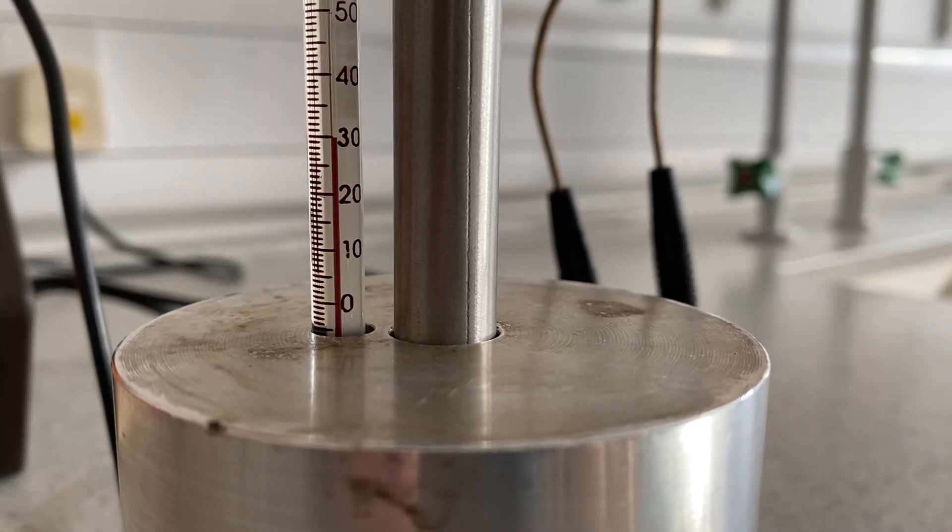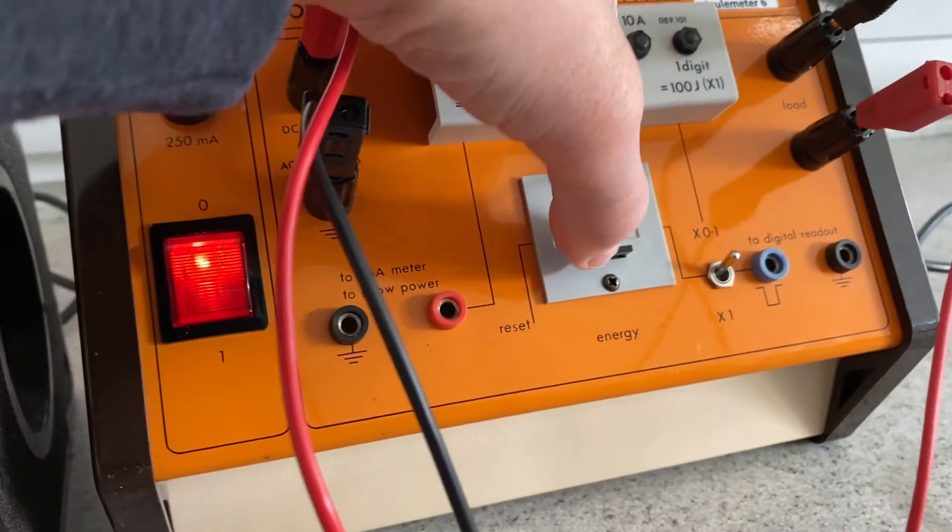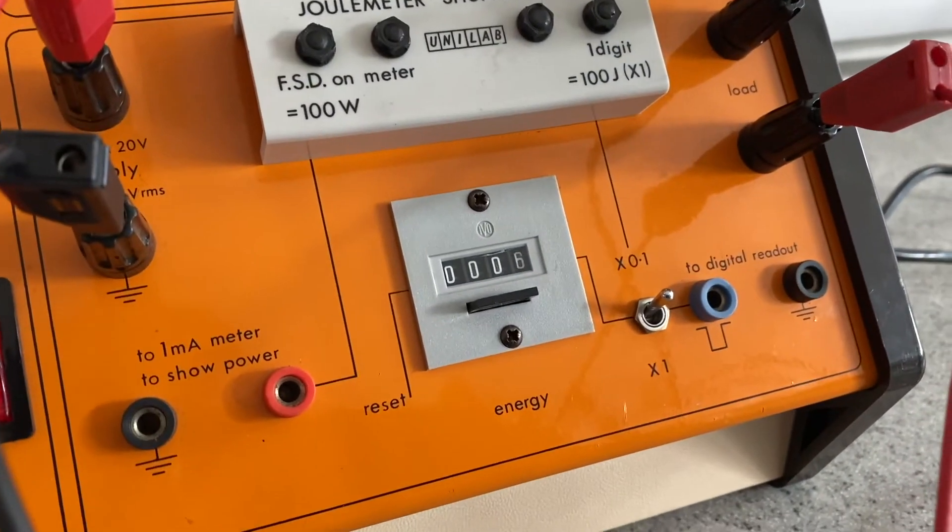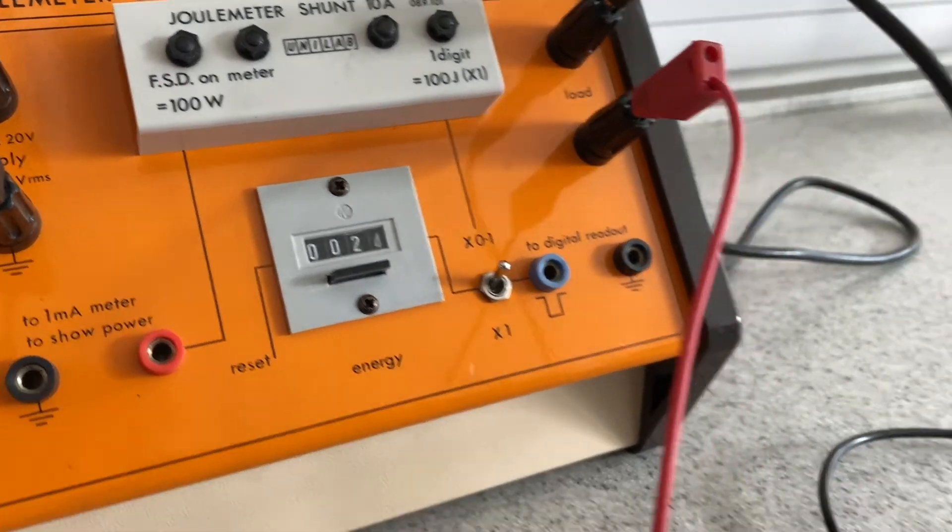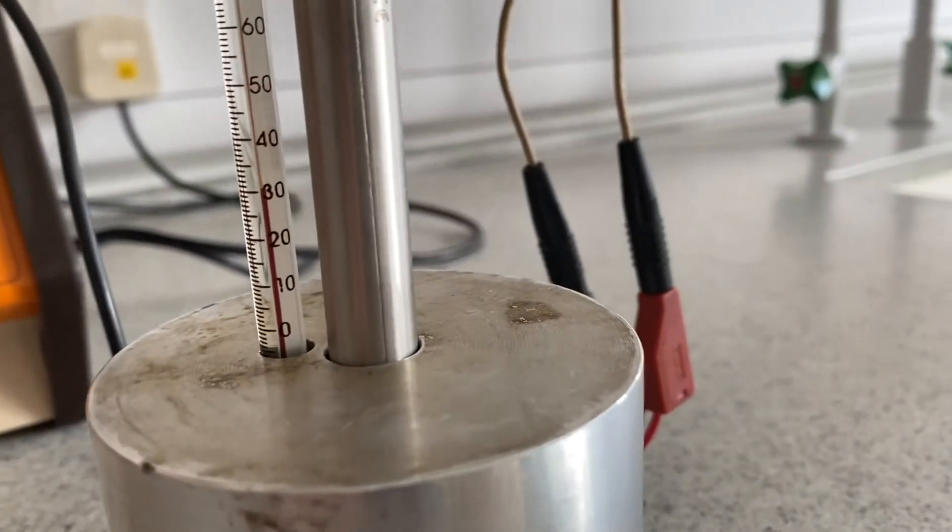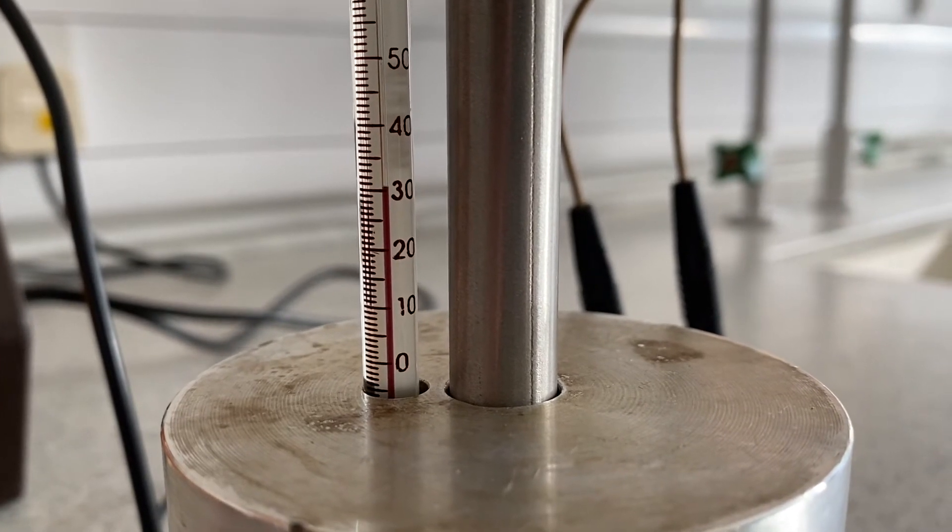Here we go then. So we're now at 30 degrees. So the metal's at 30, the heater's at 30, the thermometer's at 30. Let's reset the energy meter. And then we will measure how much energy is required to heat it up to 35 degrees. So we'll be back in a sec.